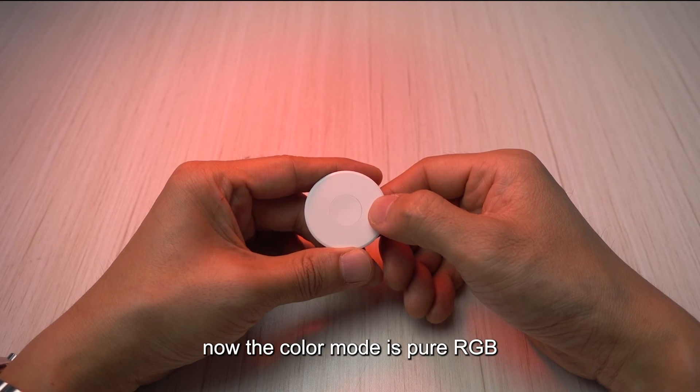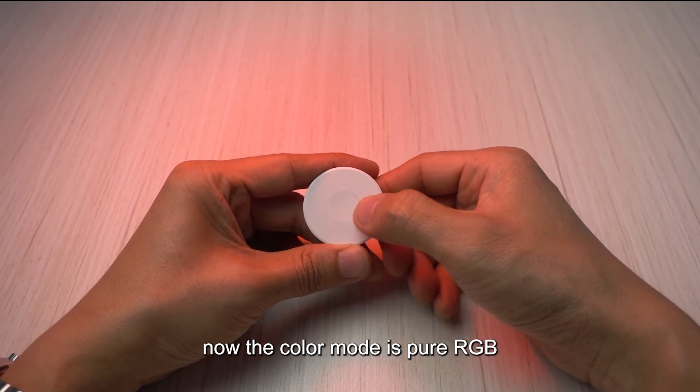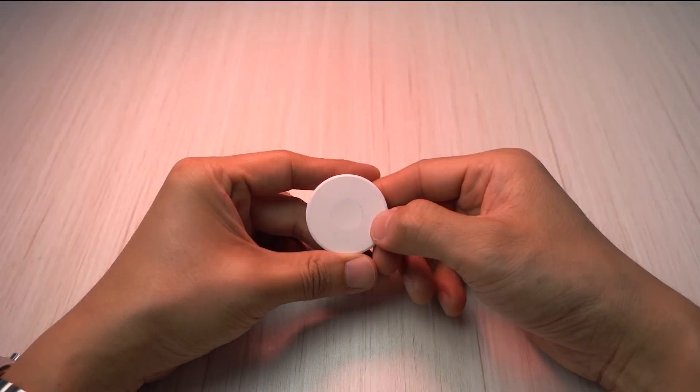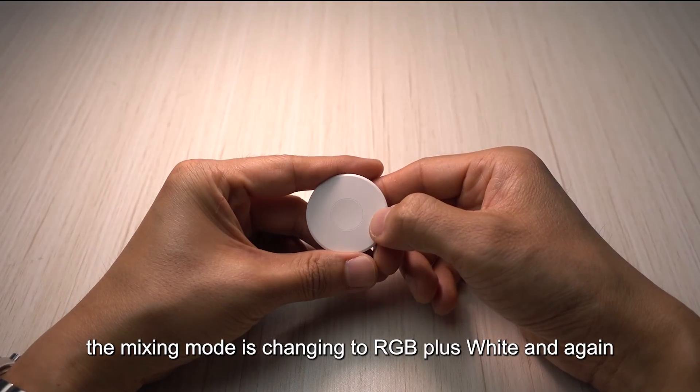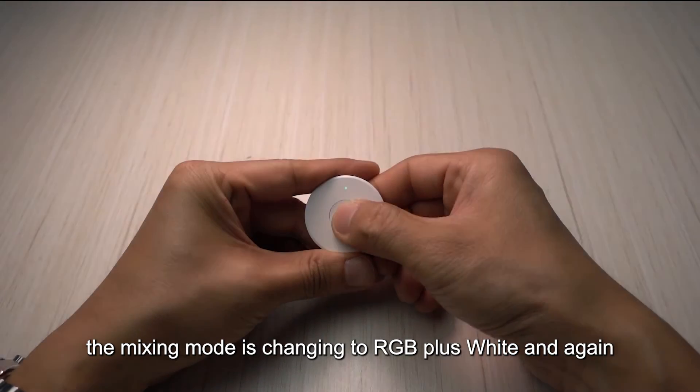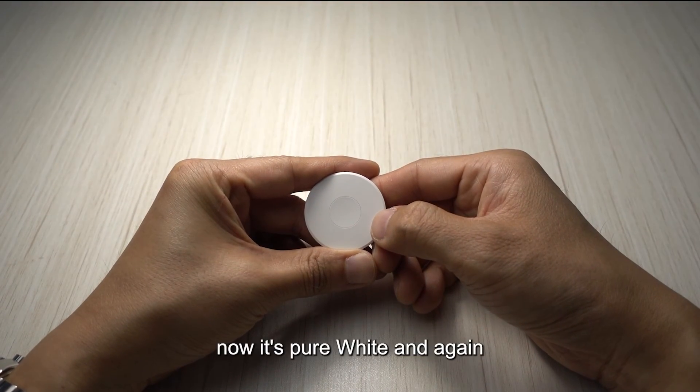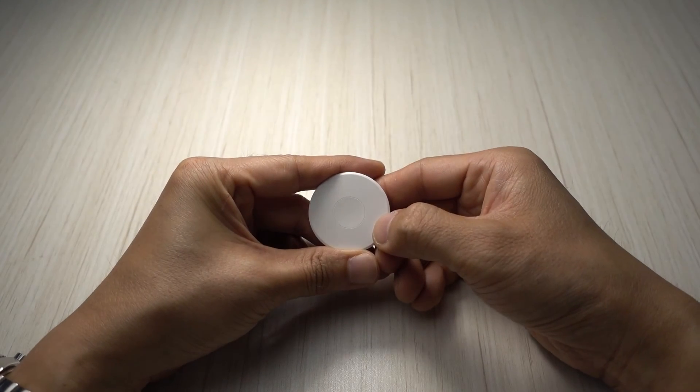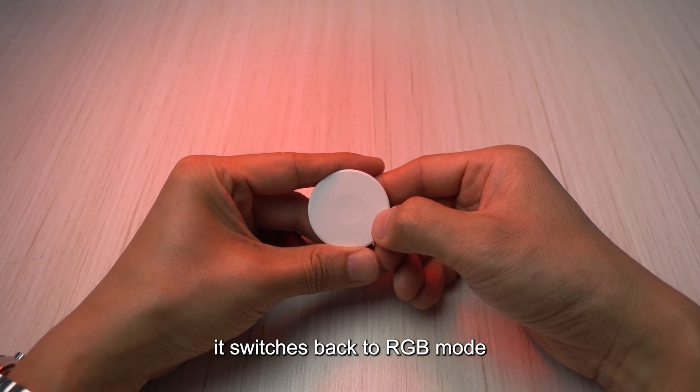Now let's have a look. Now the color mode is pure RGB. I will click for three times: one, two, three. The mixing mode is changing to RGB plus white. And again one, two, three. Now it's pure white. And again one, two, three. Now it's switched back to RGB mode.